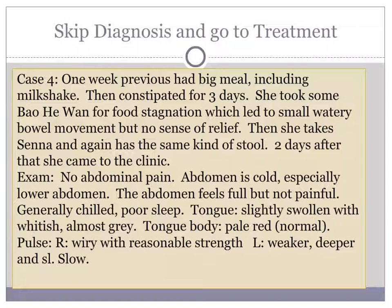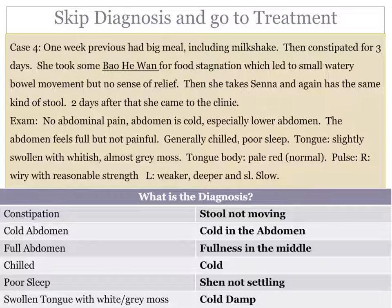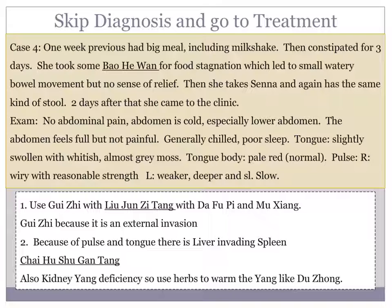Before going to what the different practitioners suggested, let's look at the diagnosis. Looking at each symptom for what it tells us for sure: constipation — stool not moving; cold abdomen — cold in the abdomen; full abdomen — fullness in the middle; chilled is cold; poor sleep is the shen not settling; and a swollen tongue with white-gray moss is cold damp. We'll put this together in a diagnosis and see what the successful treatment was. But first, let's look at what the practitioners did — noticing the logic behind these suggestions — because each practitioner had a way of thinking that had some logic, yet ideas that might seem logical can be very wrong.